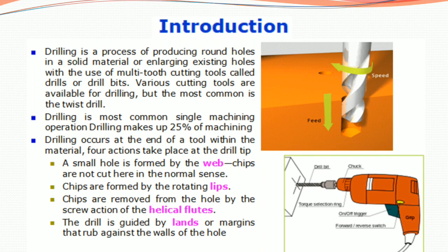Drilling occurs at the end of a tool within the material. Four actions take place at the drill tip: a small hole is formed by the web — chips are not cut here in the normal sense; chips are formed by the rotating lips; chips are removed from the hole by the screw action of the helical flutes; and the drill is guided by lands or margins that rub against the walls of the hole.